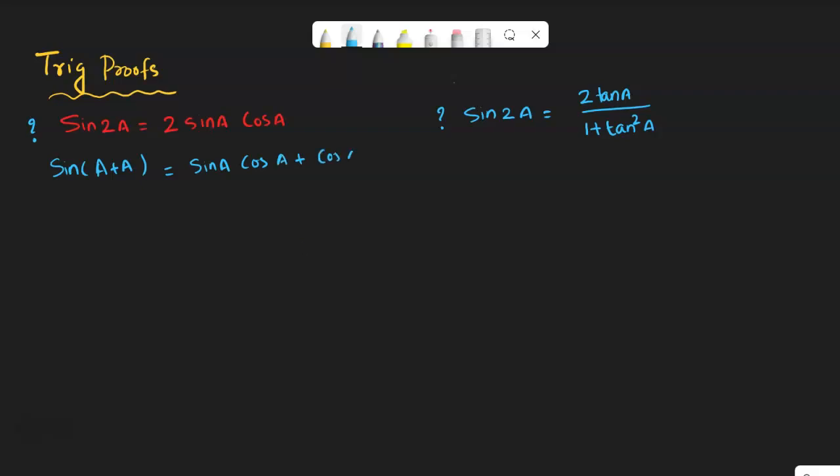Here in place of b we have a itself, so we can use the same thing. So sin a cos a plus sin a cos a, that is 2 sin a cos a.